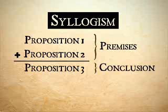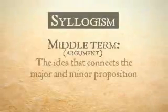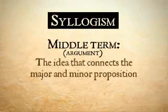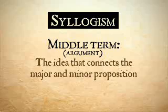The first proposition is called the major proposition, and the second proposition is called the minor proposition. So we have the major proposition, the minor proposition, and then the conclusion. The idea that connects the major and minor proposition is called the middle term. It goes between the two propositions, and is sometimes itself called the argument.